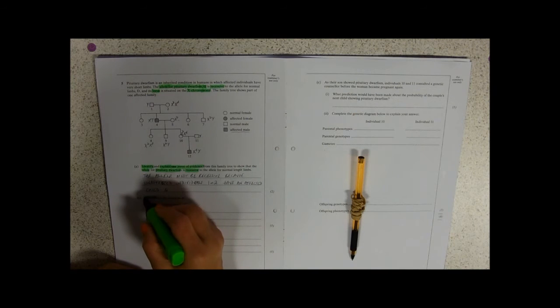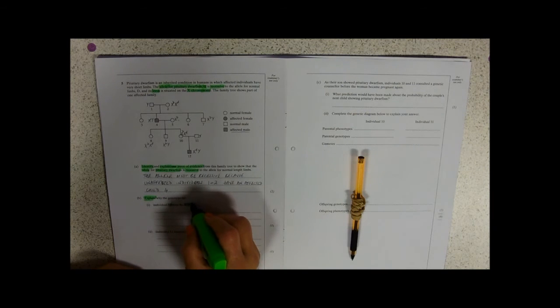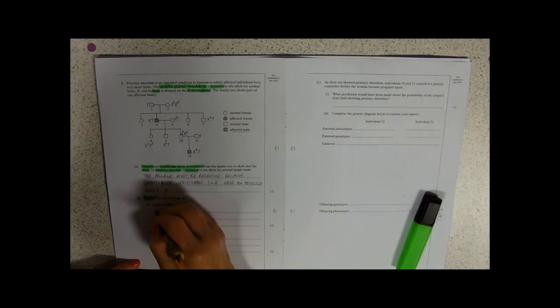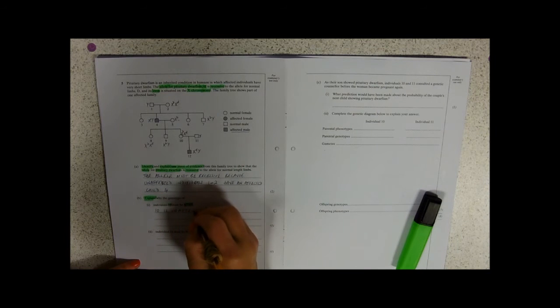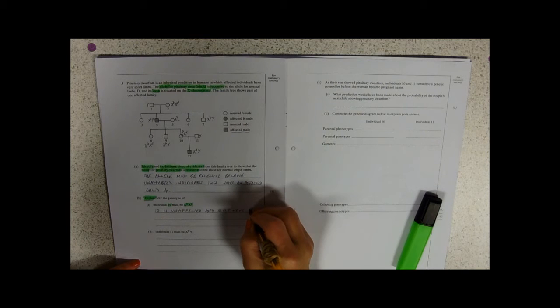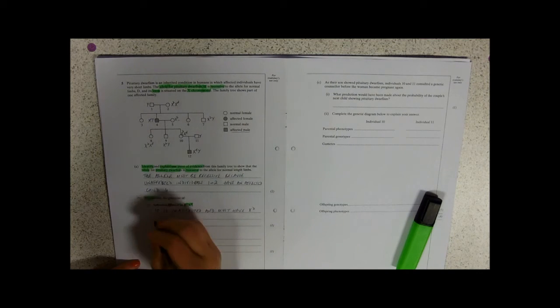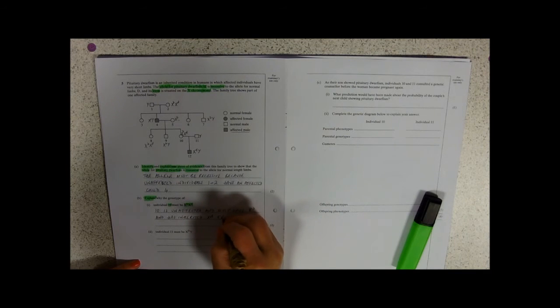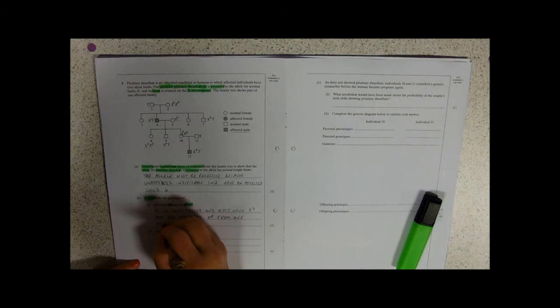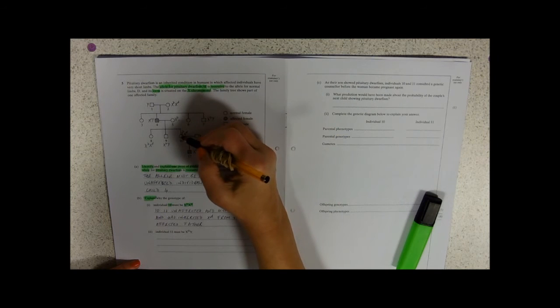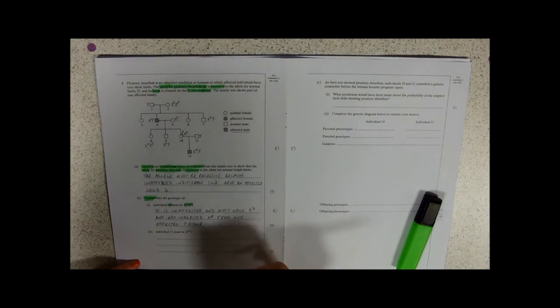Explain the reason why, and we're told the genotype. Individual 10, X big D, X little d. So, 10 is unaffected and must have X big D. And has inherited X little d from her affected father. So remember up here, she's got one unaffected chromosome from her mother and an affected one from her affected father.